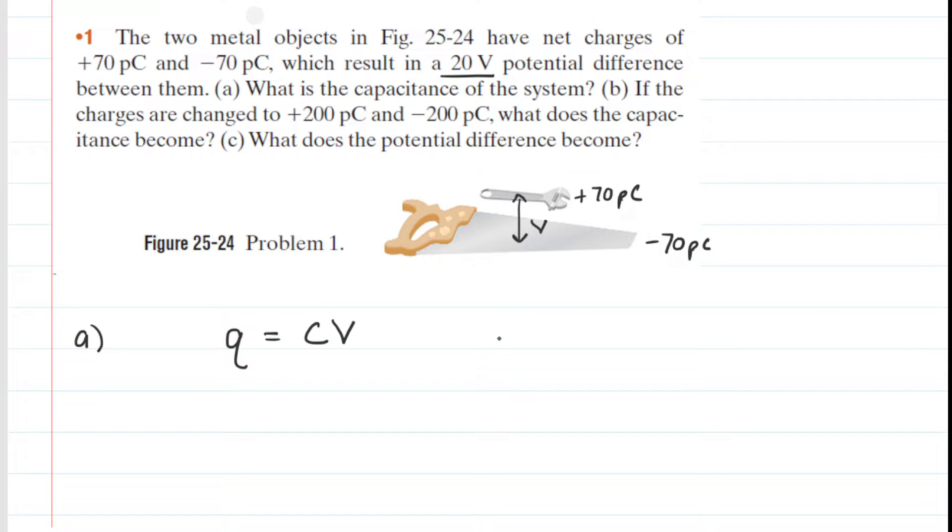Now we have the known values. We know that the charge on one of the two objects is 70 picocoulombs. We might want to multiply that by 10 to the negative 12 in order to convert that into the standard unit of coulombs, and then again the potential difference between the objects is given as 20 volts.